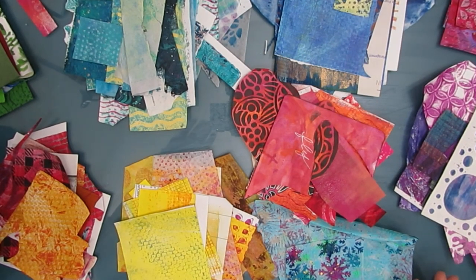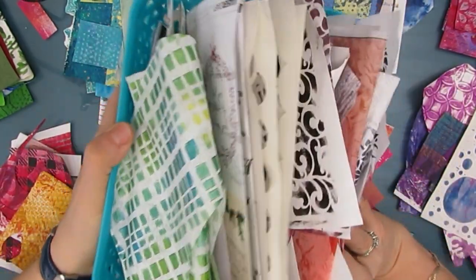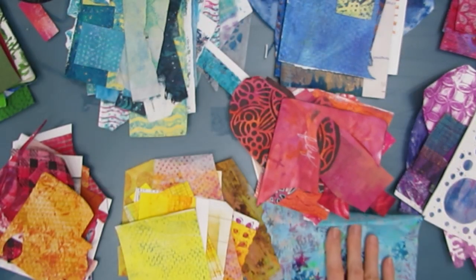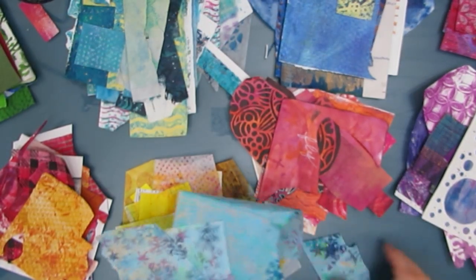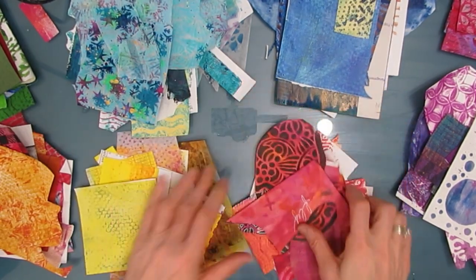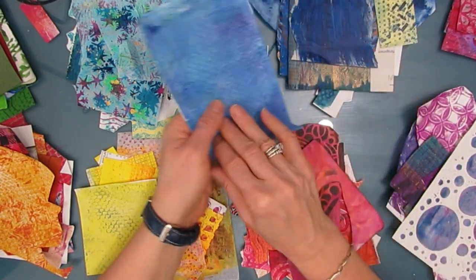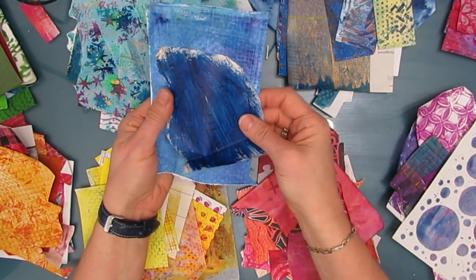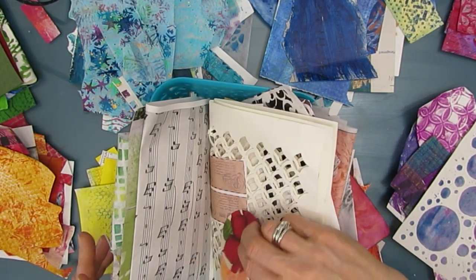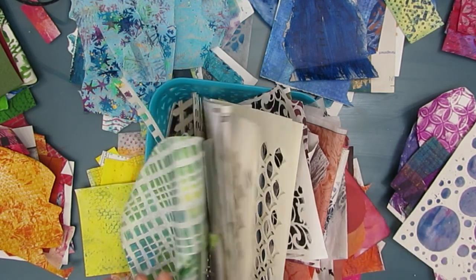So on my table I have three bins. One is collage papers, another basket for focal images and another one for sentiments. Every once in a while once the baskets get full, it's time to organize them and put them in the other storage areas and that's what I'm doing today.